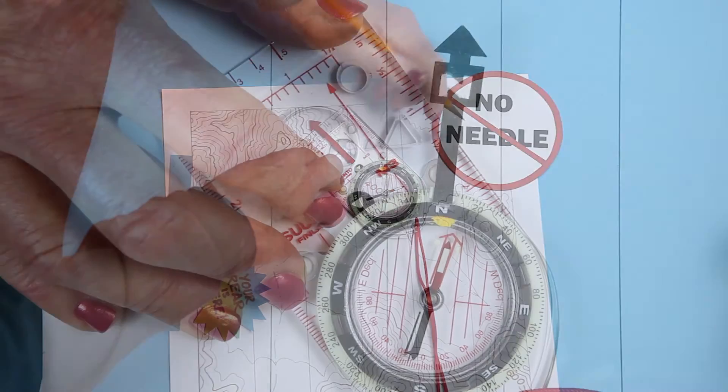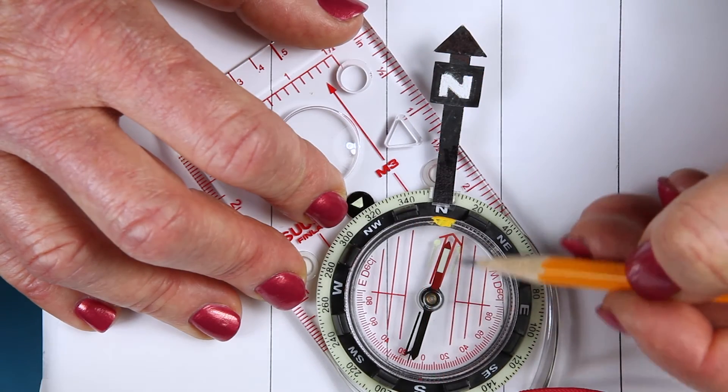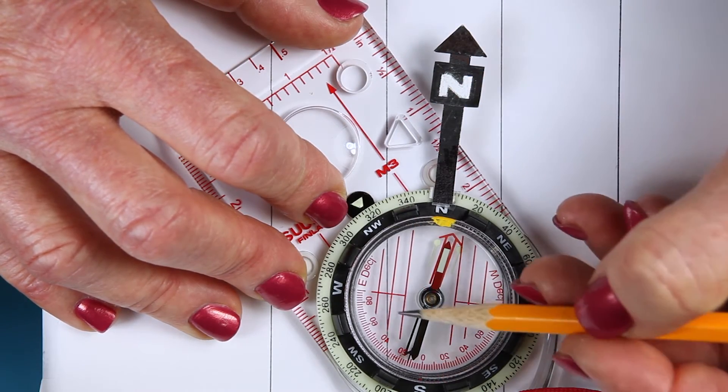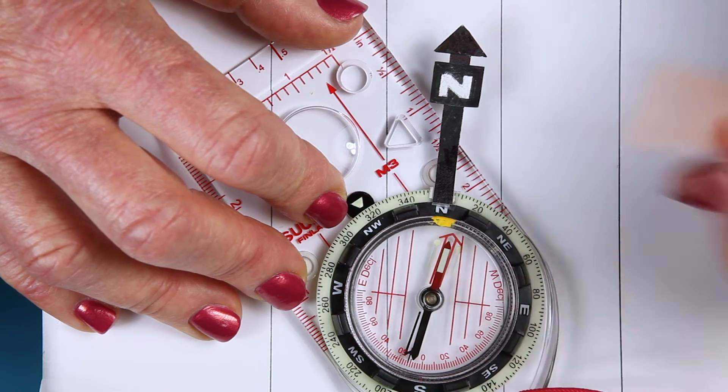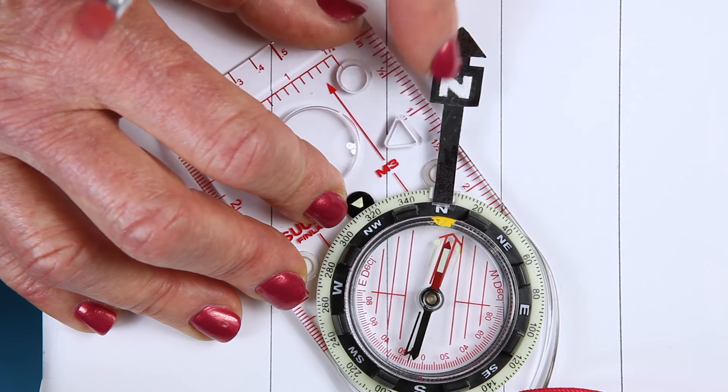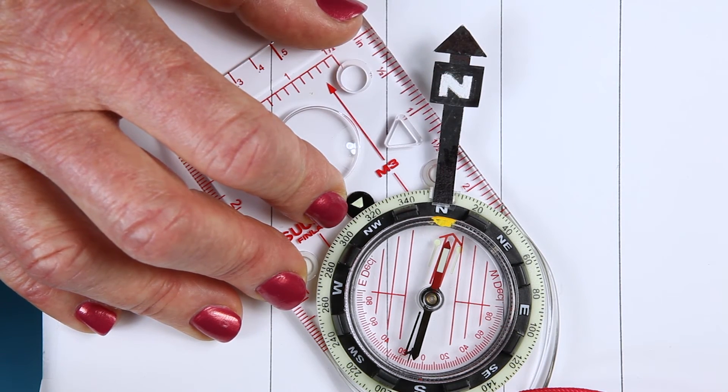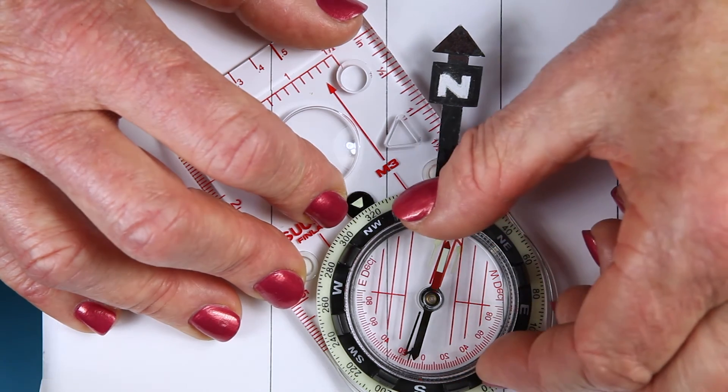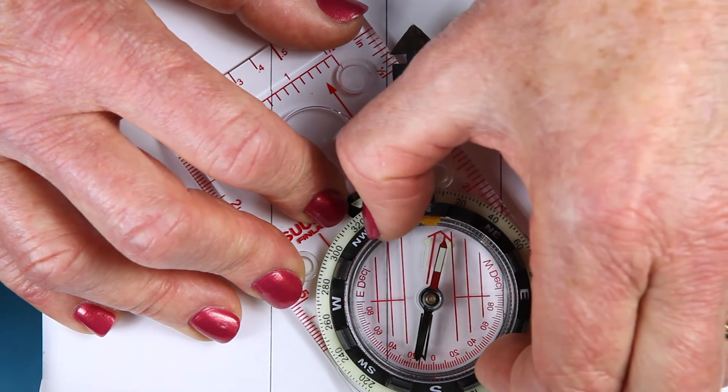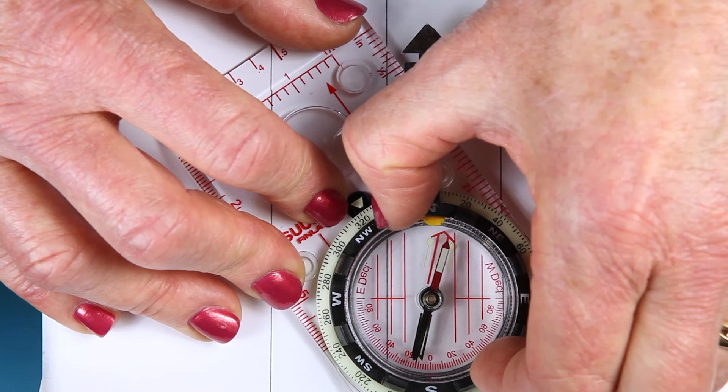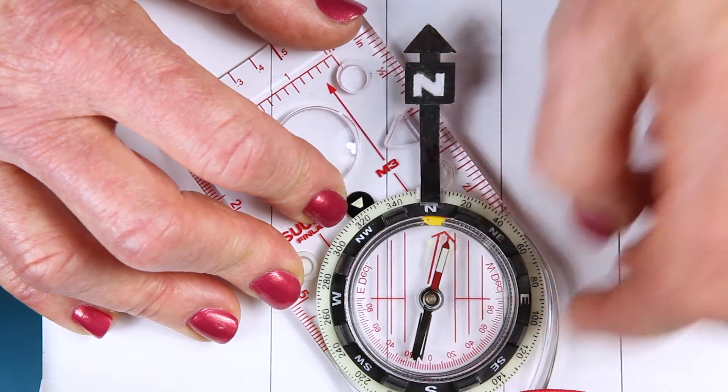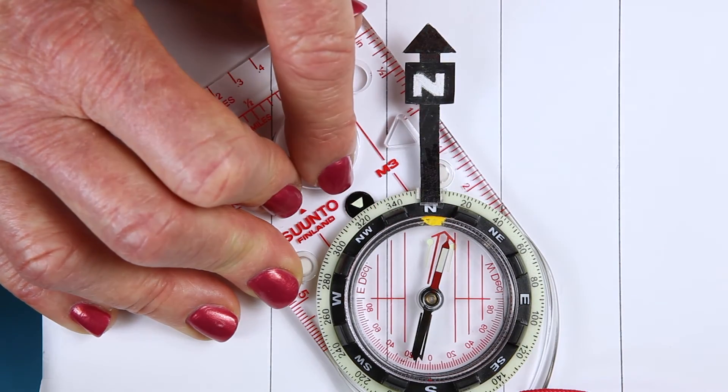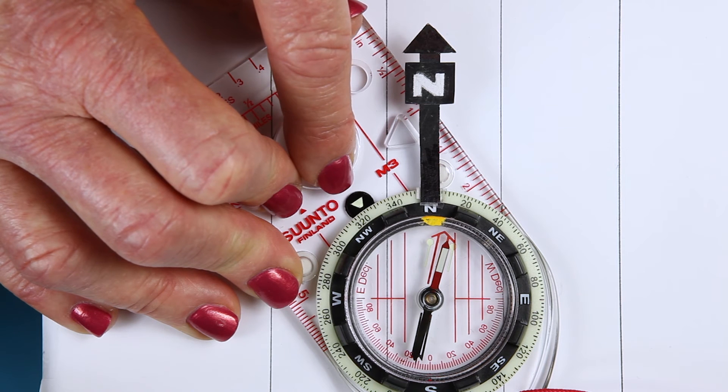See these red north south lines inside the ring? They help you line up that N more precisely towards the top of the map. Match these north south lines in the ring to the north south lines on your map. See, I can use them and get that bearing right on. Now my bearing is more precise at 324 degrees instead of 320 degrees.